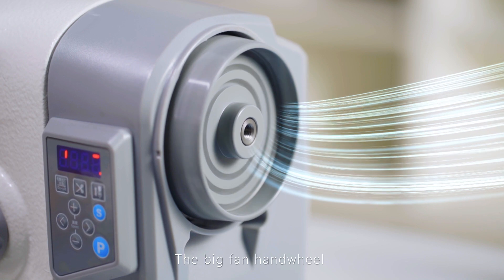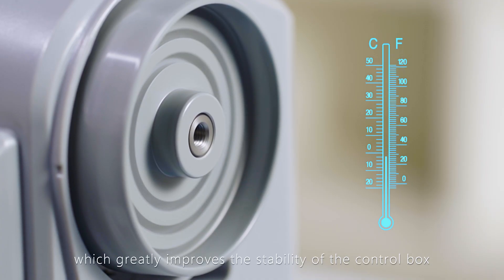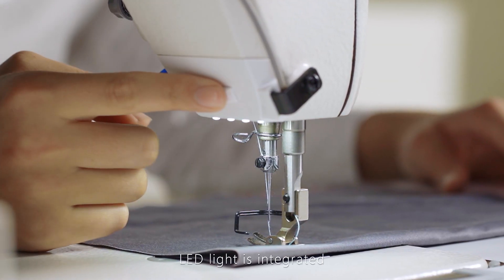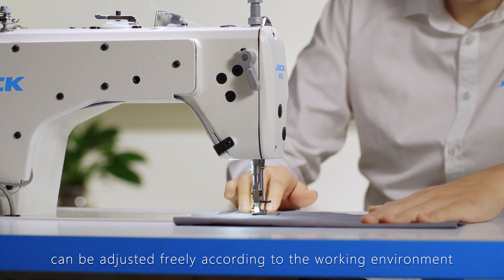The big fan hand wheel can effectively reduce the temperature of the control box, which greatly improves stability. LED light is integrated. The light brightness can be adjusted freely according to the working environment.